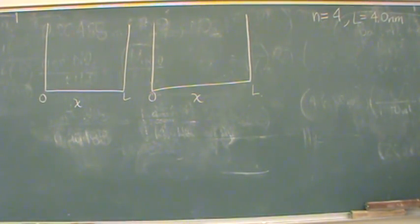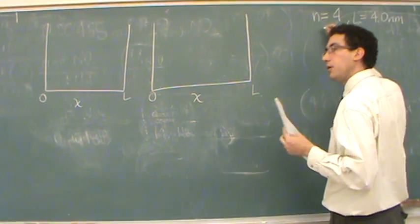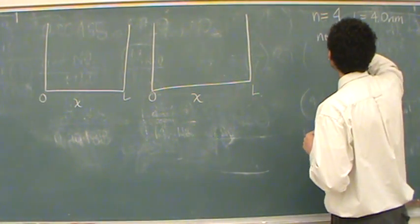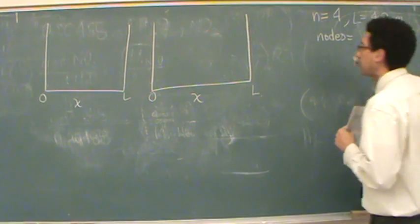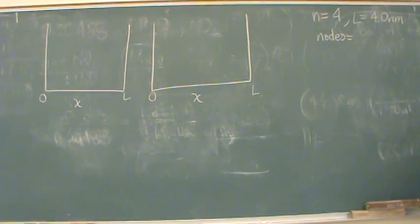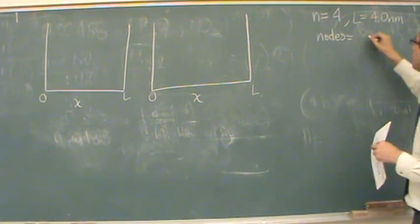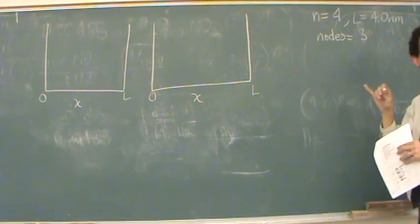And then it wants us to draw the two functions. In the first box, it wants us to draw the wave function. First, one way you can do that is you say, how many nodes are there? Does anybody remember from class today? How you find nodes? It's n minus 1, or 3, because n is 4.